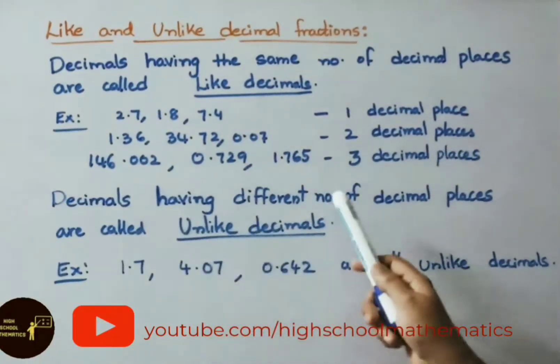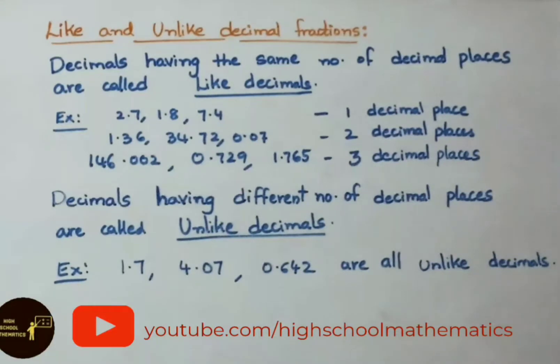Decimals having different number of decimal places are called unlike decimals. See the example: 1.7, 4.07, 0.642. First example has only one decimal, second example two decimals, third example three decimals. All are different decimals. Therefore these are all called unlike decimals.